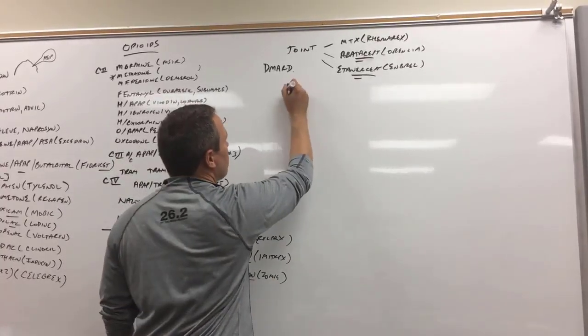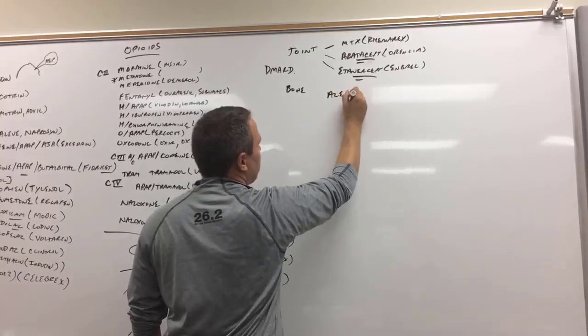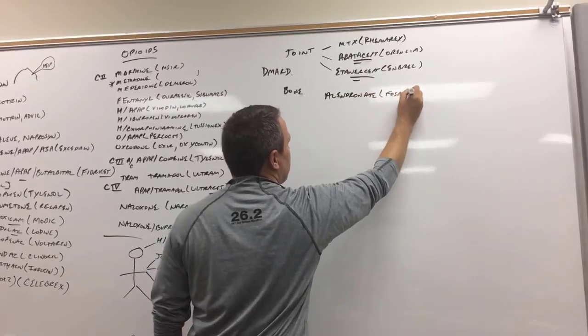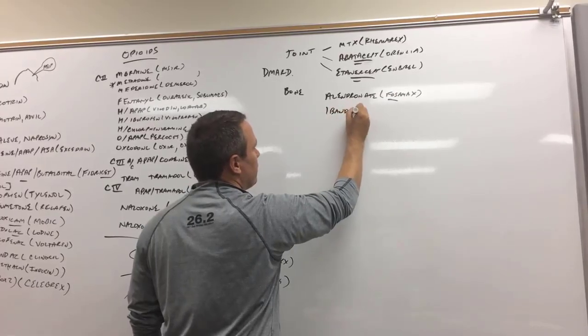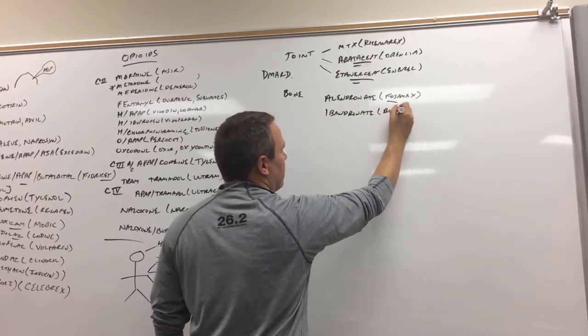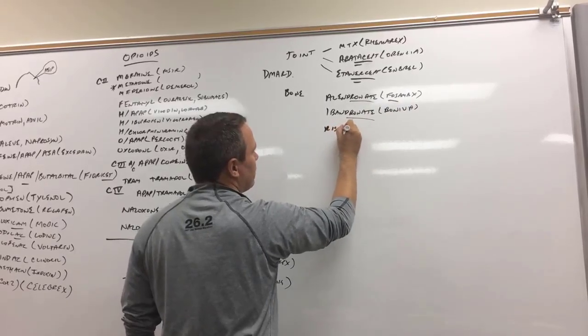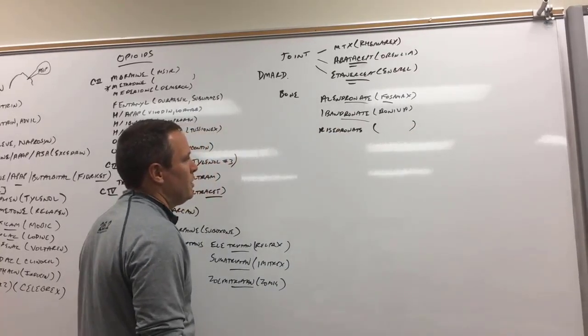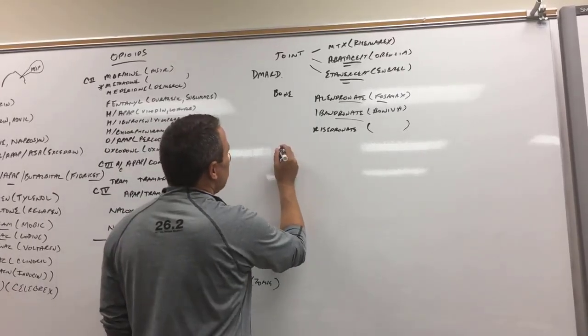But then we went to the bone, so we could do some of the bisphosphonates. Alendronate, they've all got that -dronate stem, which is Fosamax. If you know anatomy, what the fossa is. Ibandronate, which is Boniva. They cleverly put in the word bone. And then you've got risedronate, and I'm blanking on the brand name.